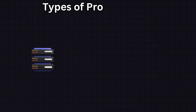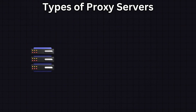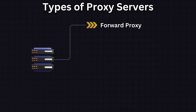There are several types of proxy servers, each serving different purposes. The first one is forward proxy, which sits in front of clients and is used to send requests to other servers on the internet. It's often used within internal networks to control internet access.